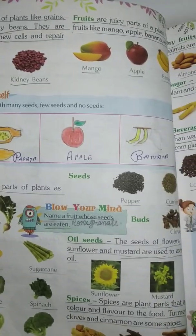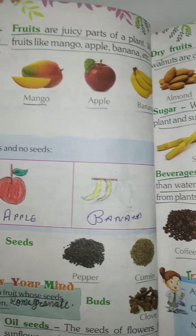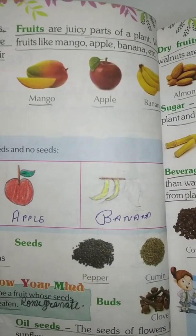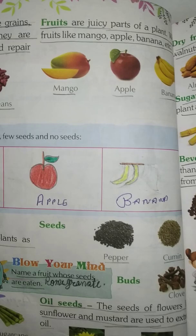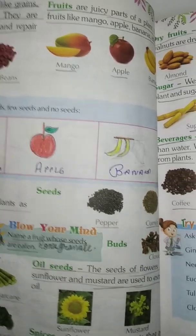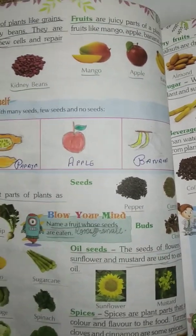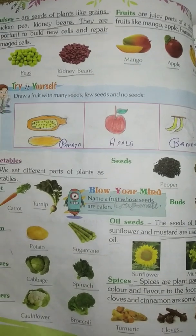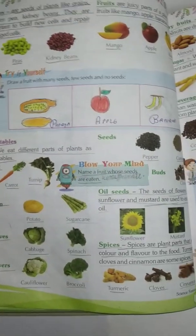Fruits. Fruits are the juicy parts of a plant. We eat fruits like mango, apple, banana, and others. Do you like to eat fruits? Who is the king of fruits? Mango! You can also have mango, apple, banana, and pomegranate.